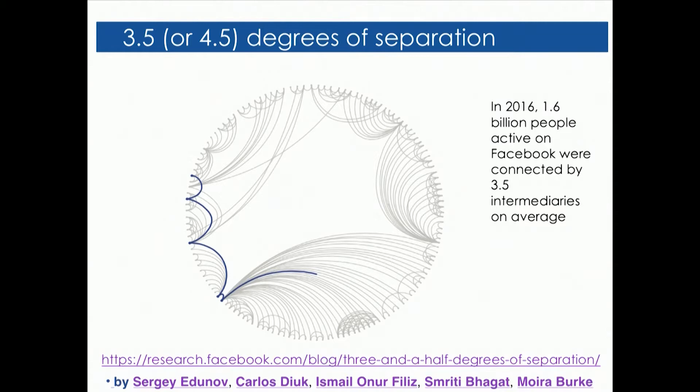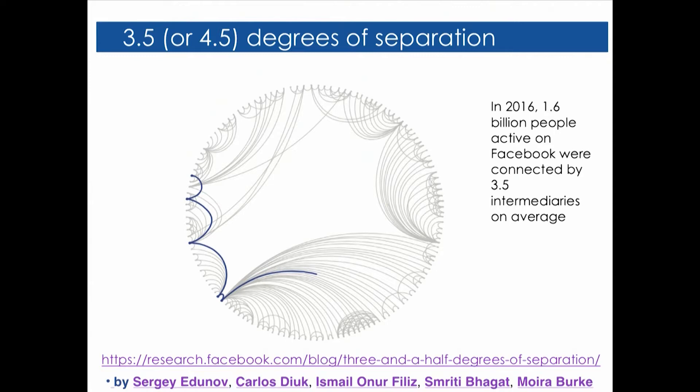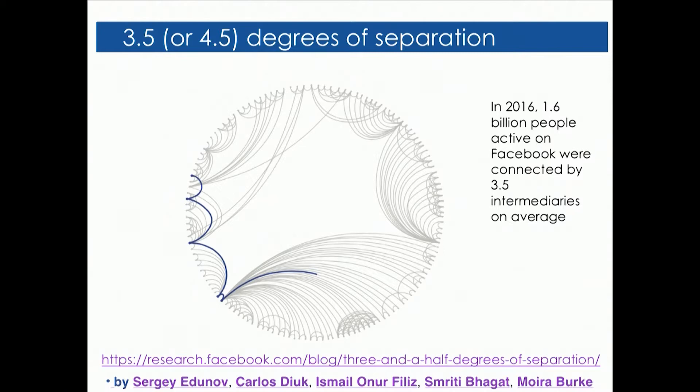One other thing you might ask is, now that there are so many people connected through Facebook, how many hops exactly does it take to get from one individual to any other on the globe through Facebook friendship ties? This is actually an interesting technical challenge — how to do this estimate not just overall, but for each individual to generate their average number of intermediaries to anyone else on the globe. This turned out to be 3.5 intermediaries, or equivalently 4.5 hops.